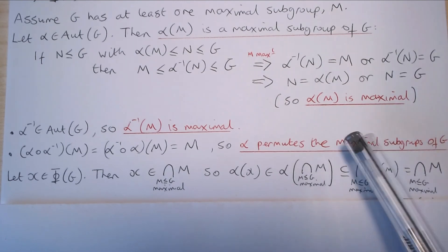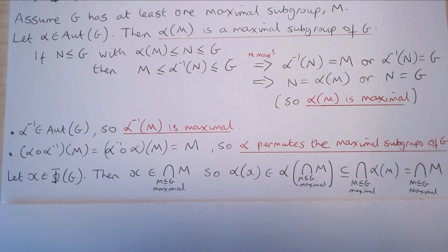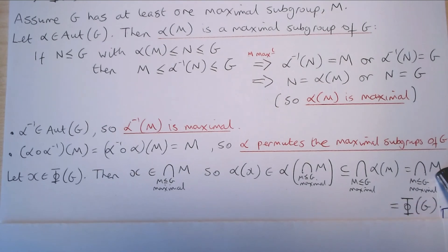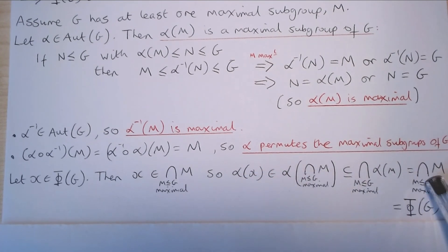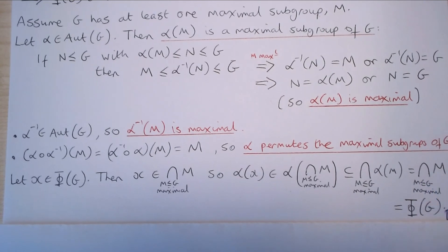But we have just shown that the collection of all of the α(M)'s equals the collection of all of the maximal subgroups of G. So in other words, α(x) is contained in the intersection of all of the maximal subgroups of G, which equals the Frattini subgroup of G. Therefore, we have shown that the Frattini subgroup of G is characteristic in G.